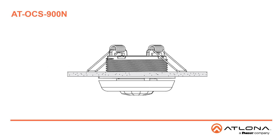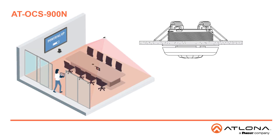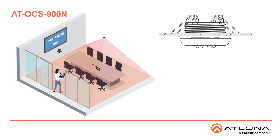This ceiling-mounted sensor uses passive infrared technology to detect occupancy in the coverage area. It comes with two lenses that cover approximately 900 or 2,000 square feet, depending on ceiling height. A blind air insert is included that limits the sensor's field of view, preventing detection in unwanted areas such as doorways or windows with heavy cross-traffic.